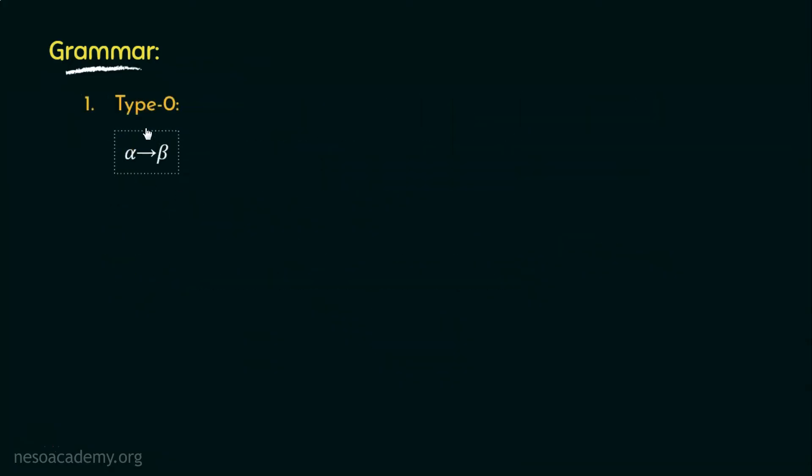The first category is called type zero. If you remember, in the previous session we learned that the alpha and beta of a production rule can be any string over N union T.